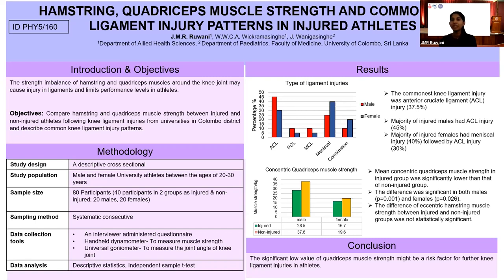The mean value of quadriceps muscle strength in the injured group was significantly lower than that of the non-injured group, and the difference was significant in both males and females. However, the difference in hamstring muscle strength between the injured and uninjured groups was not statistically significant.